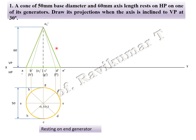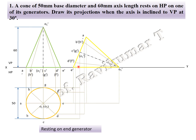Next is the second position. The cone rests on HP on one of its generators. We go with the resting side, which is point E. This generator is placed on the XY line, so we place it on the XY line. The naming is done.